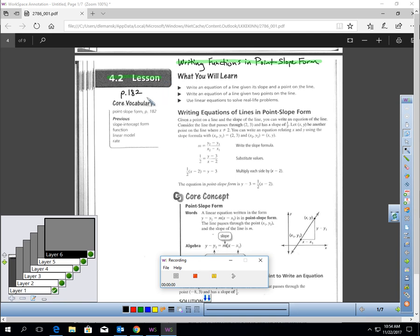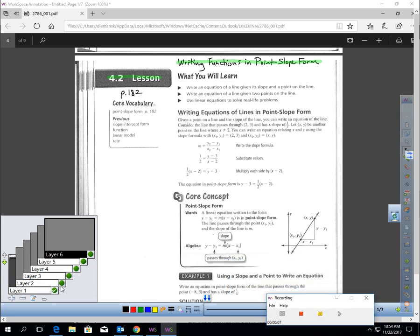Lesson 4.2, page 182 of your book, Writing Functions in Point-Slope Form. In this lesson, you're going to learn how to write an equation of a line given its slope and a point on the line, how to write an equation of a line given two points on the line, and how to use a linear equation to solve a real-life problem.